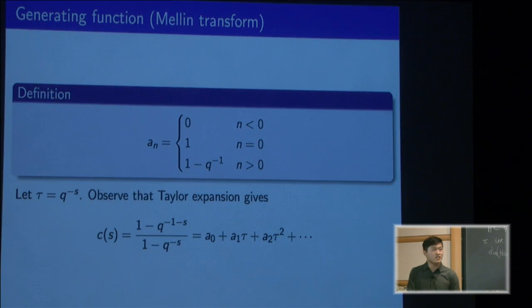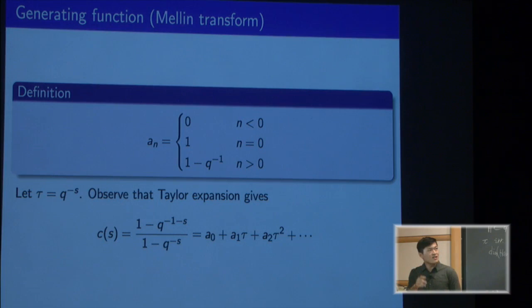The c-function here is a rational function in q to the minus s. If you take the Taylor expansion in the direction of q to the minus s, then you see that really, the c-function is just the generating function for this sequence of a_n's. Because we're considering a function on the integers, the generating function is really just another way of saying Mellin transform.